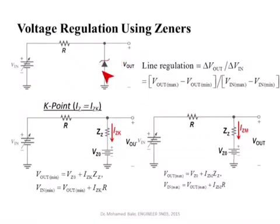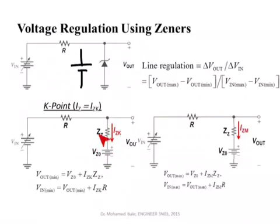In reality we don't use the ideal model for the Zener diode — we don't replace it with a battery. The more accurate practical model represents the Zener by Vz-note, which is the intersection of the linear characteristics with the voltage axis, and the dynamic impedance Zz. This says that as current through the diode increases, the voltage across it will change a little bit. So when there is a variation in the input voltage, there will be a variation in the output voltage as well, but the role of the Zener is to minimize this variation. We define this term as line regulation.